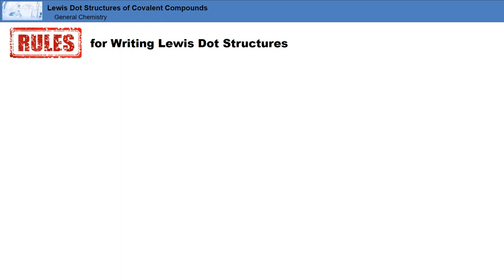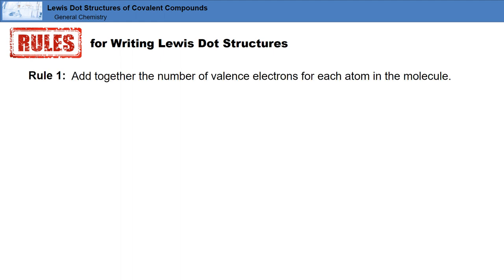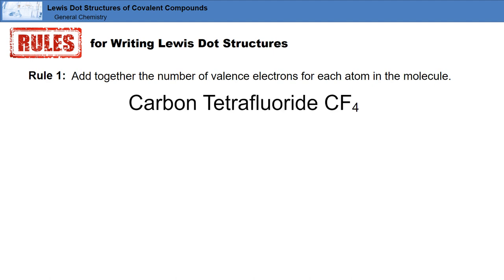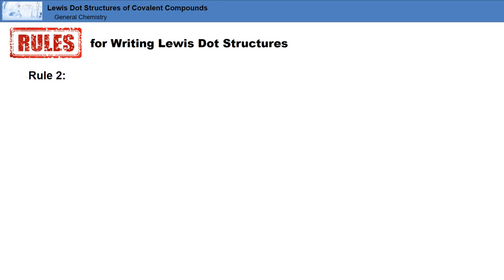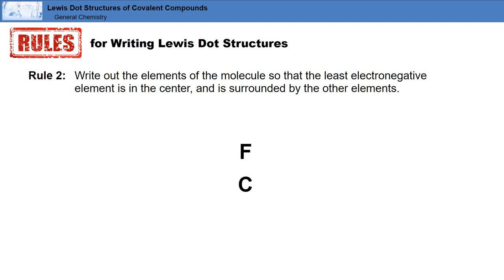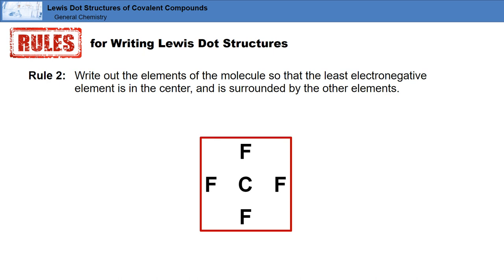Now let's review the rules for writing Lewis dot structures. Rule number one is: add the number of valence electrons for each atom in the molecule together. Let's use carbon tetrafluoride as an example. Carbon has four valence electrons and fluorine has seven valence electrons. Therefore, the total number of valence electrons is four plus four times seven, which equals 32. The second rule is: write out the elements of the molecule so that the least electronegative element is in the center and is surrounded by the other elements.